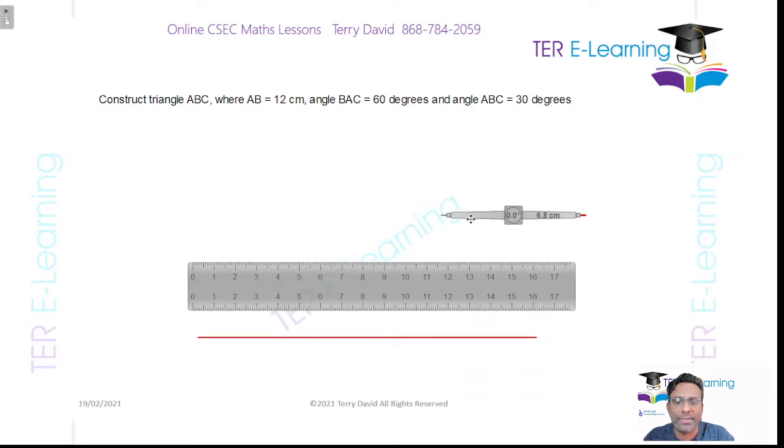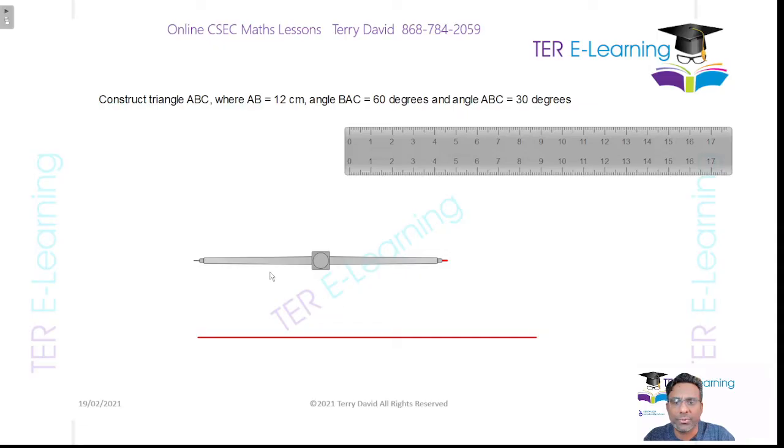Then we're going to take our compass and we are going to open that compass to a length of 12 cm. So we have to construct an arc that is actually 12 cm long.